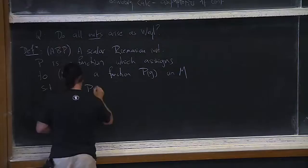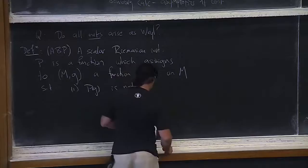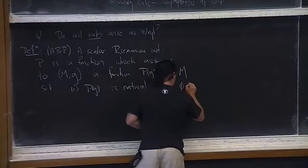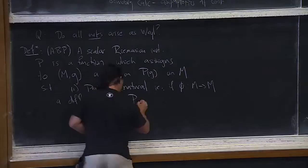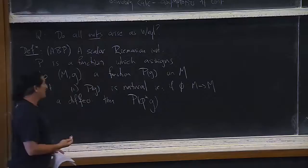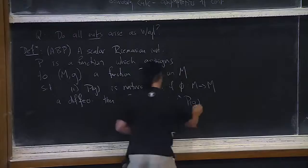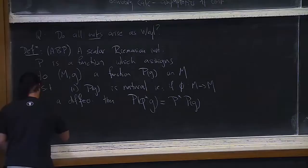Such that: first, P(G) is natural — meaning it's coordinate independent. So if Phi is some diffeomorphism of the manifold to itself, then P(Phi*G) is the same as pulling back P(G) under that diffeomorphism. That's saying it's coordinate independent.